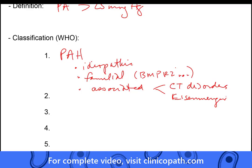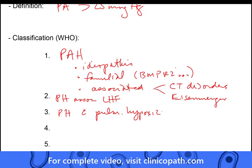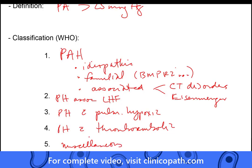Then we go into the secondary causes. WHO Group 2 is pulmonary hypertension associated with left heart failure. Group 3 is pulmonary hypertension with pulmonary hypoxia — mostly our lung diseases like COPD and interstitial lung diseases. Group 4 is pulmonary hypertension with recurrent thromboembolic disease. And the last group is miscellaneous. So we have our primary group, left ventricle failure, pulmonary hypoxic change most commonly from COPD with cor pulmonale, and thromboembolic disease.